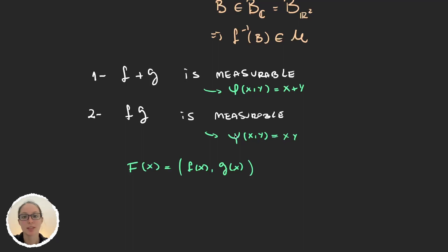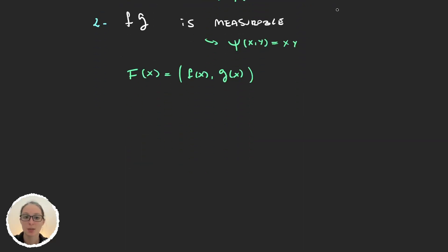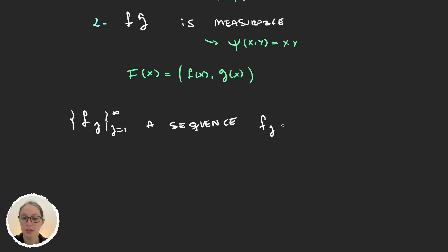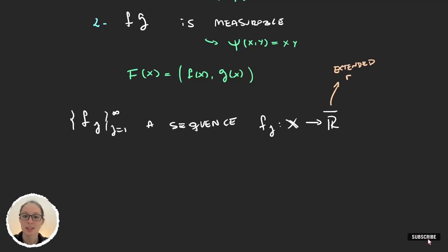The second tool we will see is what happens when we have a sequence. So we have a sequence of functions f_j, each defined from a set X with a sigma algebra M, onto R-bar — the extended real line.